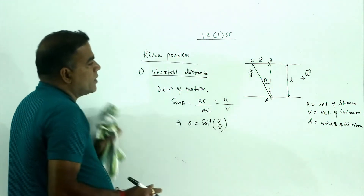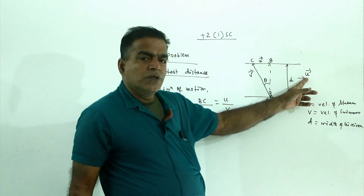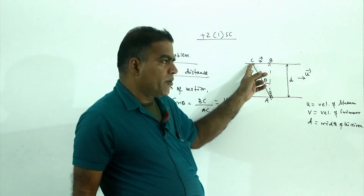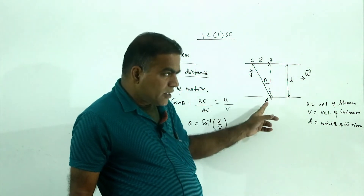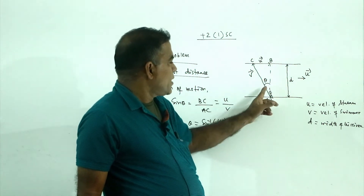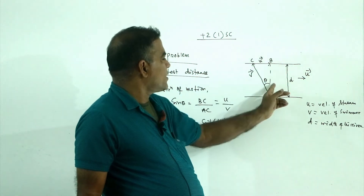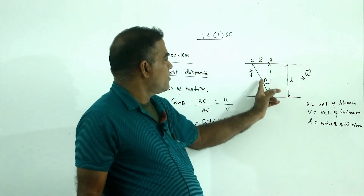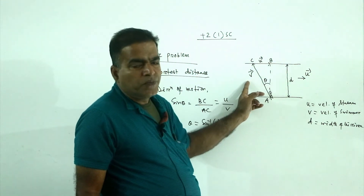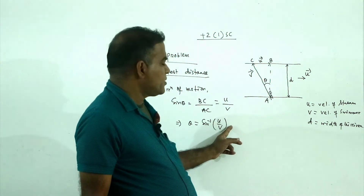For example, let the stream velocity u be 1 km per hour, and the swimmer velocity v be 2 km per hour. If the swimmer wants to go straight across, then theta equals sin inverse of 1 by 2, which means theta equals 30 degrees.